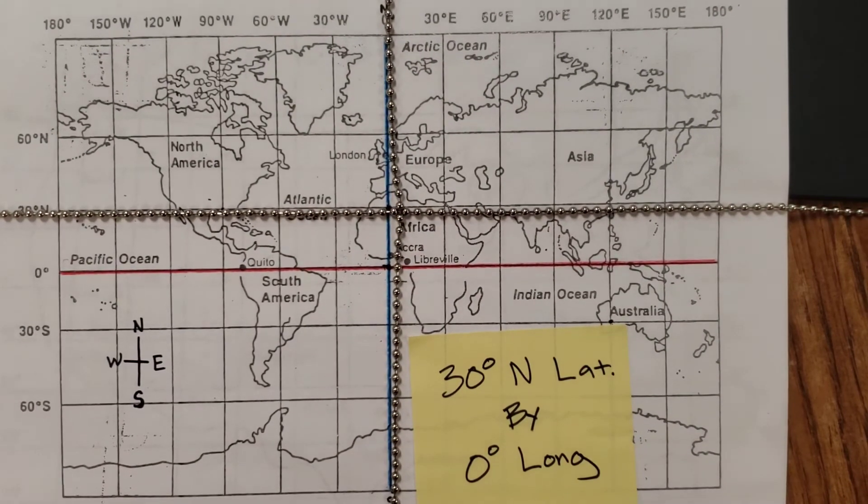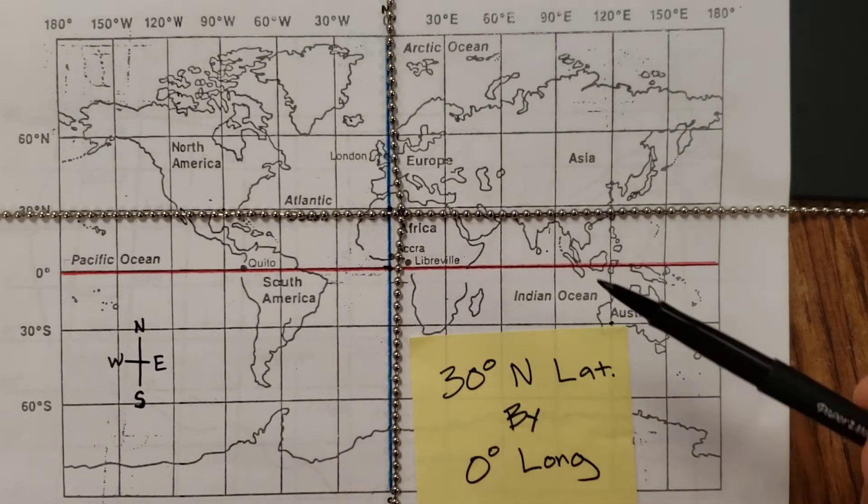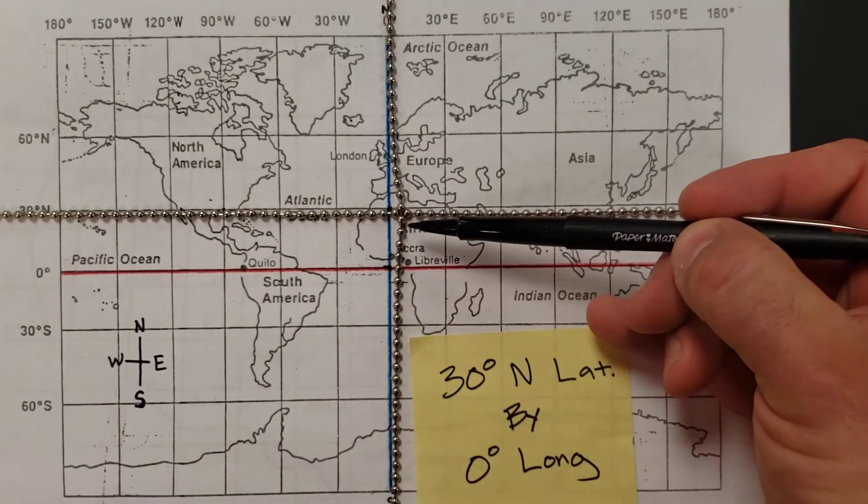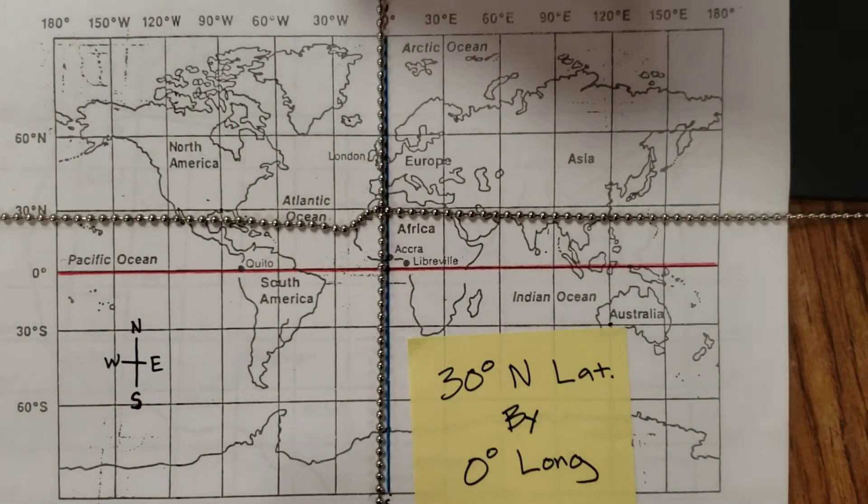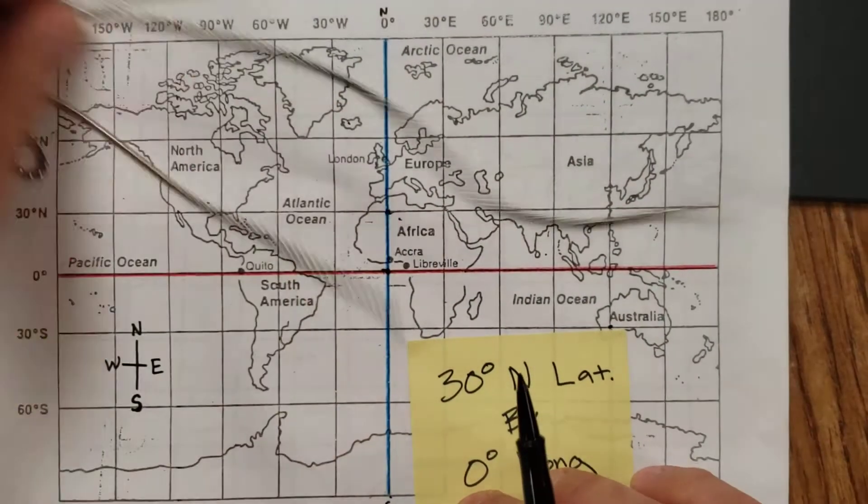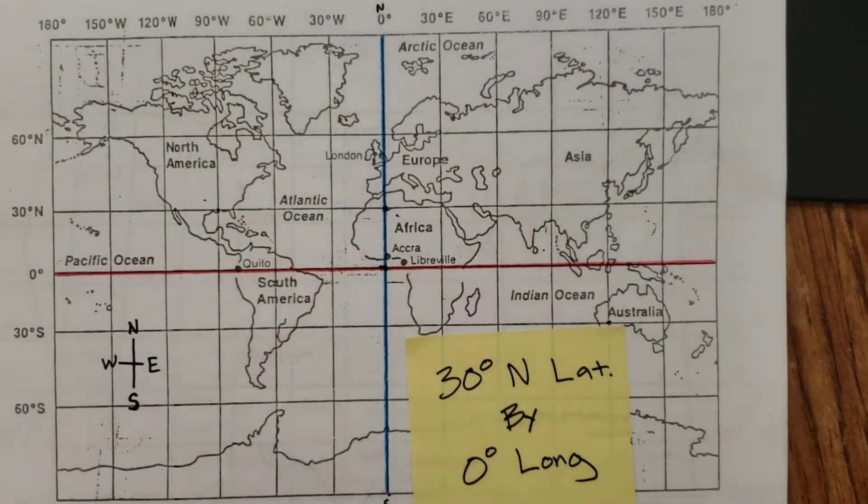And you are somewhere in the Sahara desert. Hope you dressed appropriately if you're going to 30 degrees north by zero degrees longitude. You're not going east or west on that one. You're just there at zero.